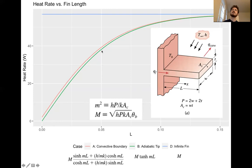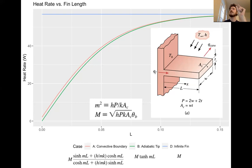As you move along, the convective boundary and adiabatic tip models get very close together, for two reasons. First, as the fin gets longer, there's so much heat transfer coming off the side that relatively speaking, the heat transfer off the tip becomes smaller. Second, it's also becoming smaller in absolute terms — as the fin gets longer, the temperature at the tip gets closer to ambient, so there's a lower heat rate coming off the tip in the convective boundary model. After a certain length, they're really indistinguishable. That's what we mean when we say just use the adiabatic tip.